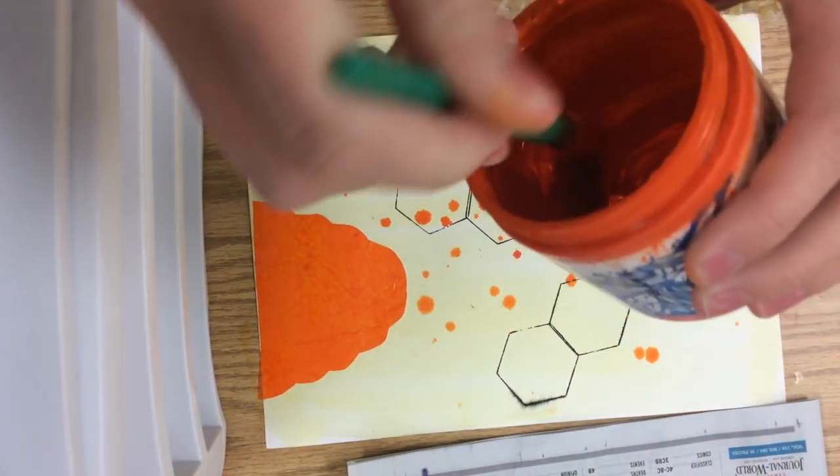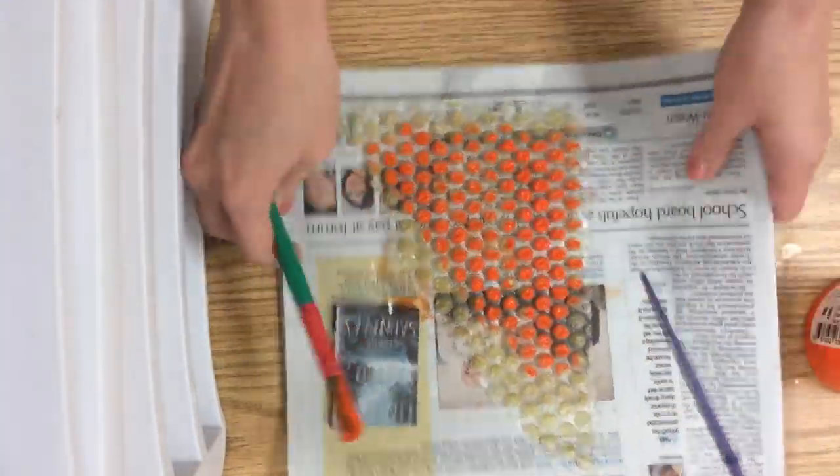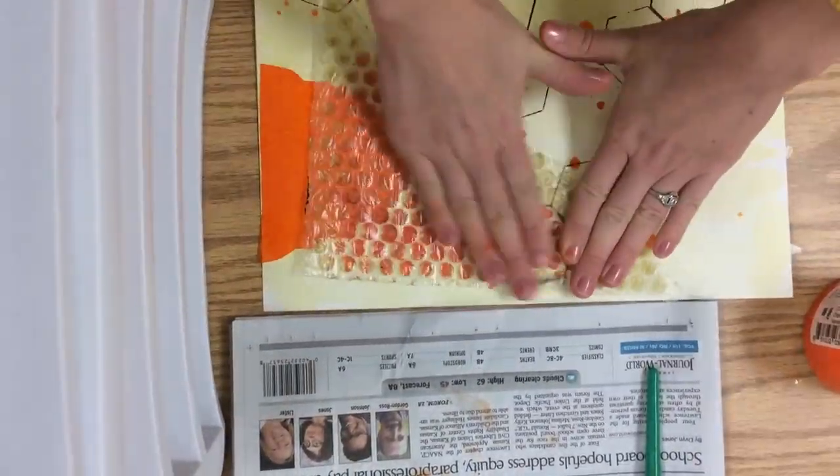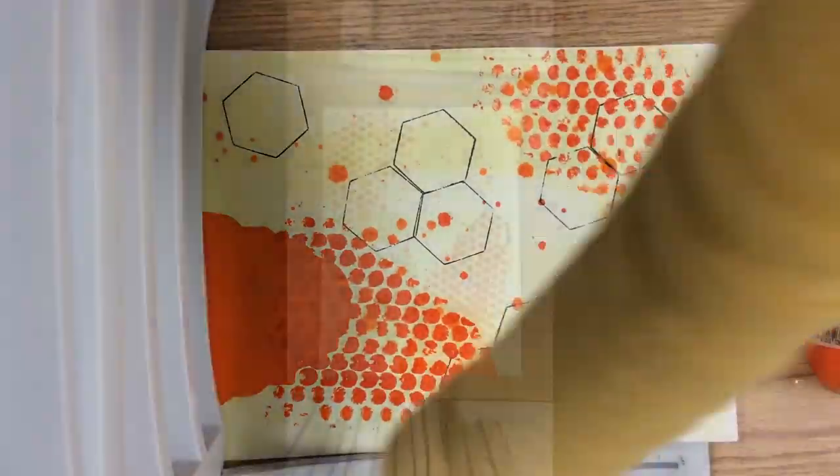Another option for you would be using bubble wrap to stamp your paper. Any of this can be overlapped. I'm just painting on some printing ink and then pushing it on my paper. You can even use the same one a couple times.